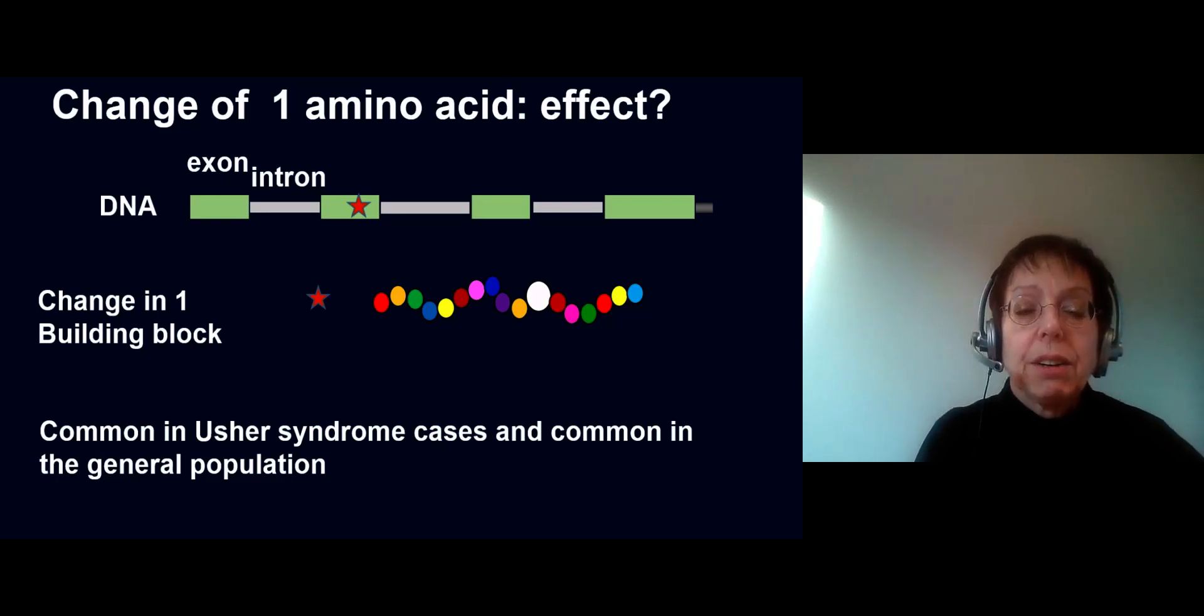Furthermore, we look whether the amino acid that is changed is conserved in evolution. This means in other species, such as in mouse or chicken, is the same amino acid at this place, or is that position more variable and could another amino acid at this place function as well.